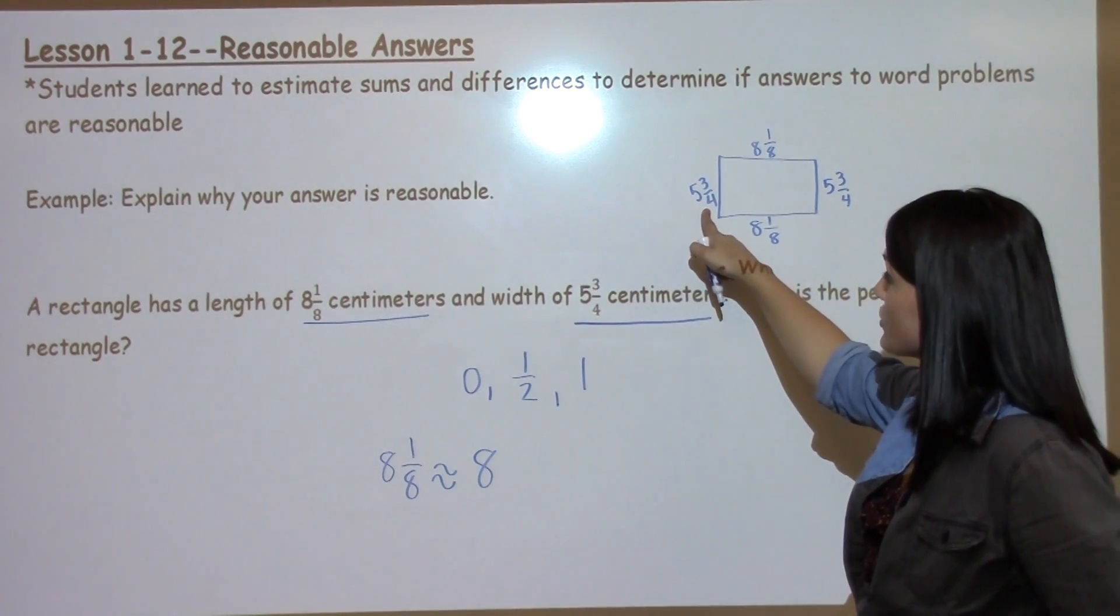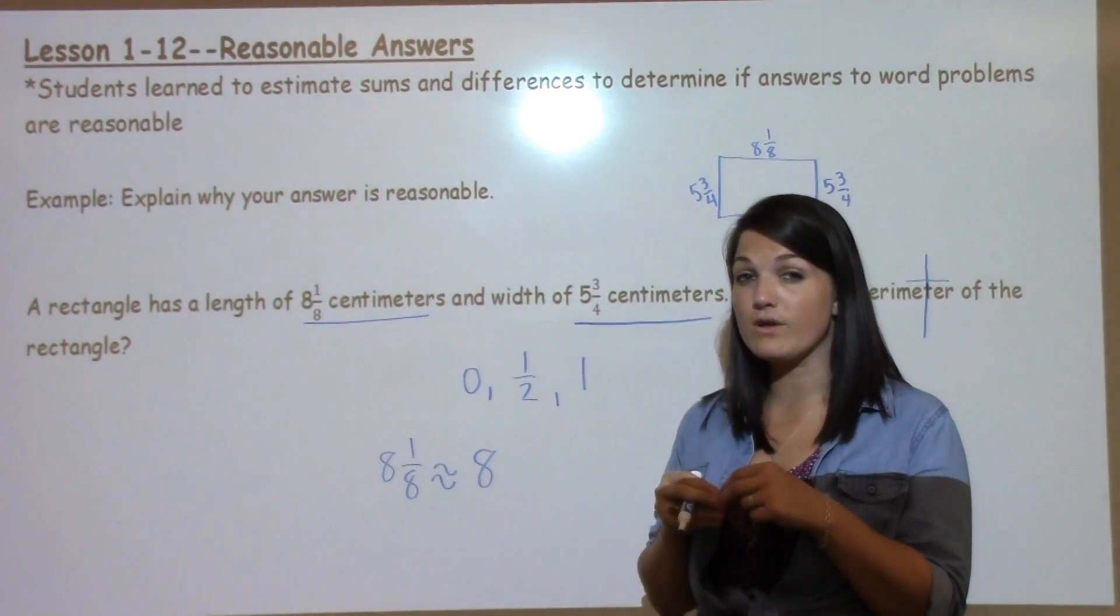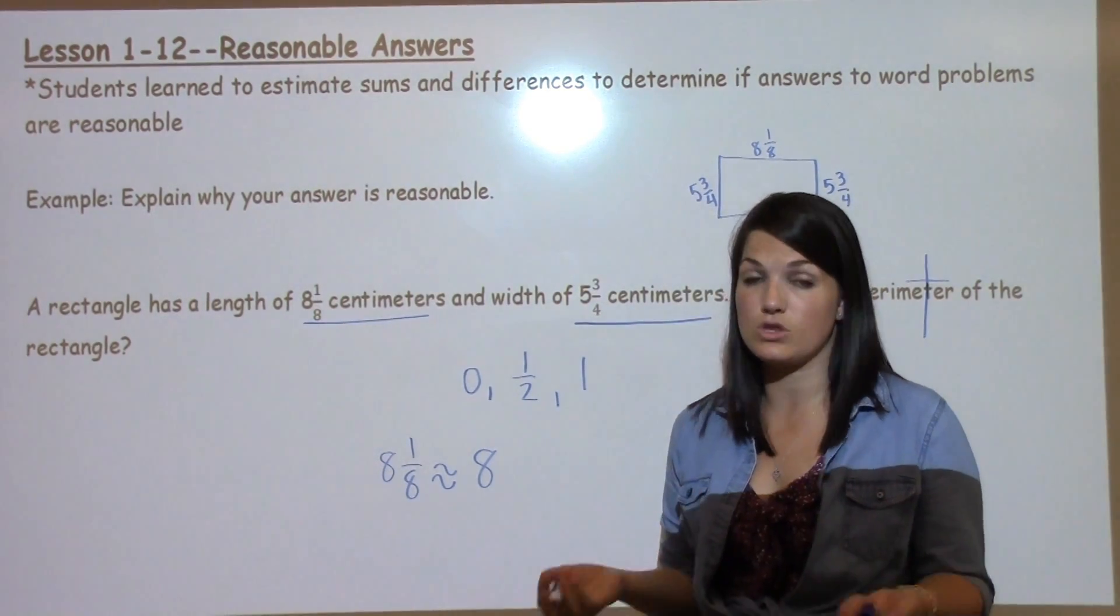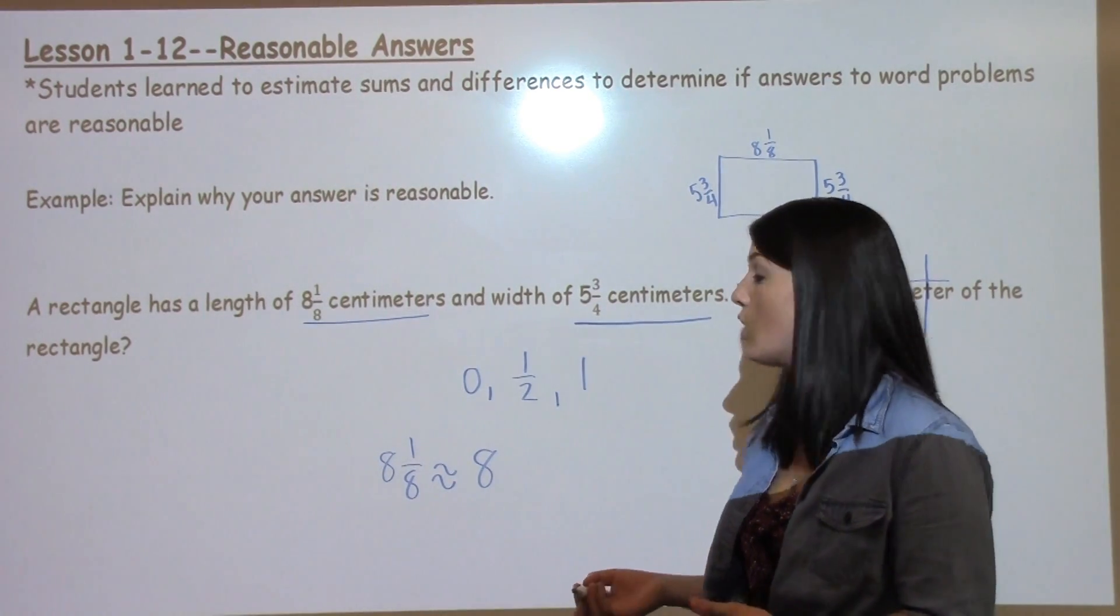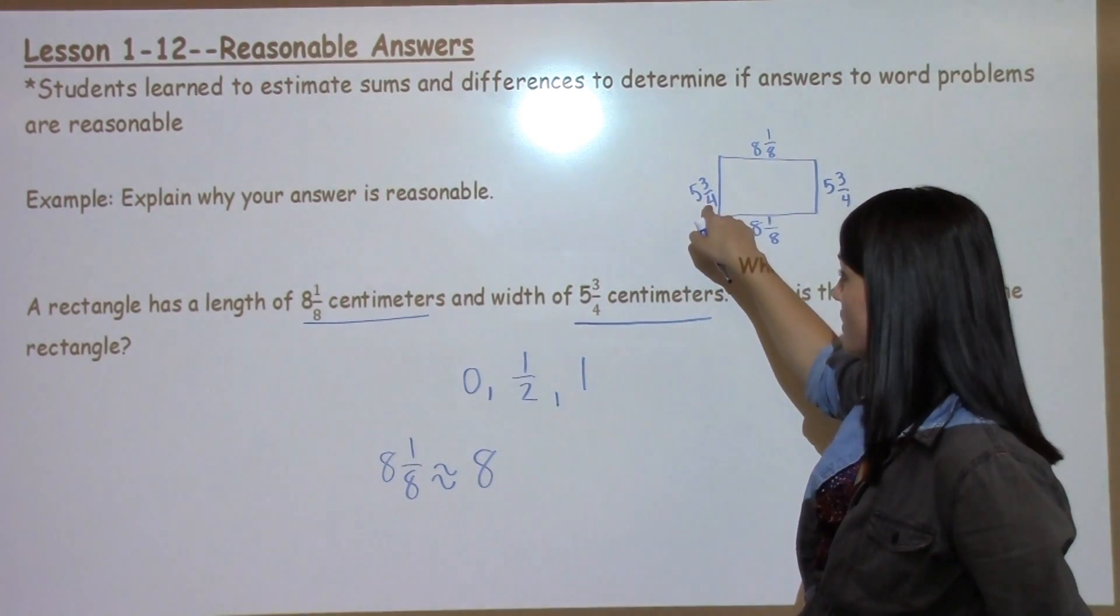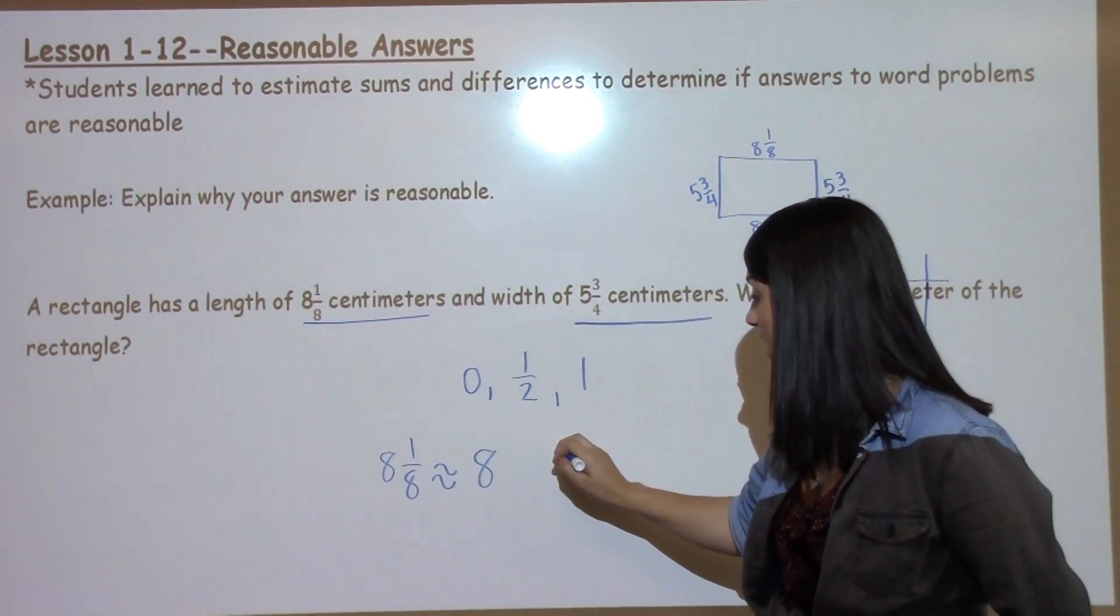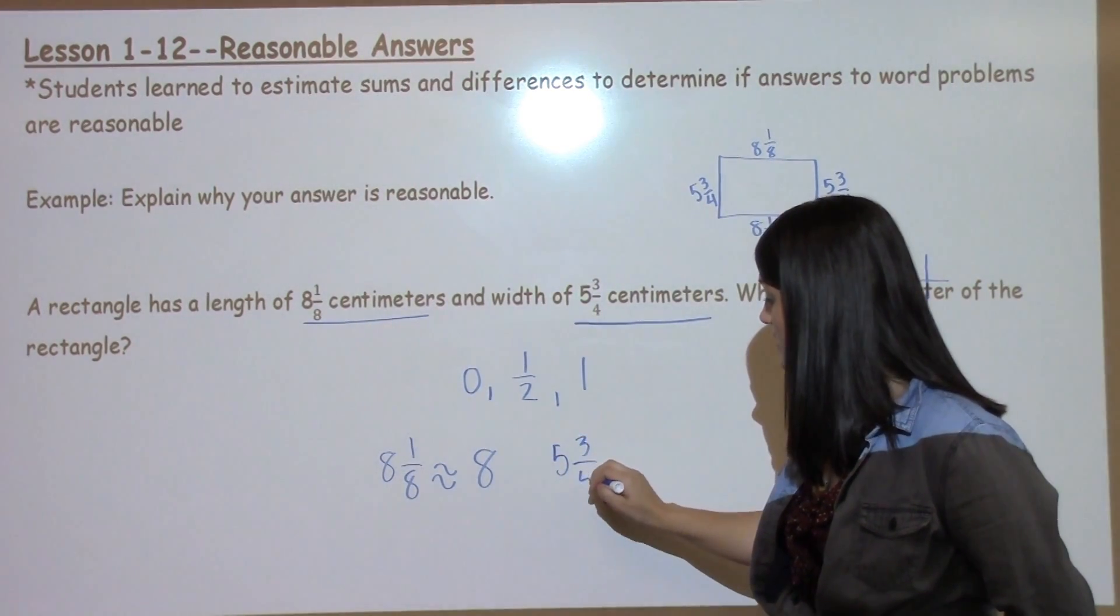Then I can look at 5 and 3/4. I know that 3/4 is very close to 4/4, which would be 1 whole. So 5 plus 1 whole is actually going to round to 6.